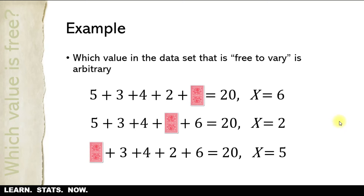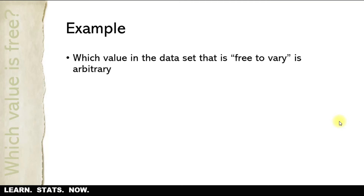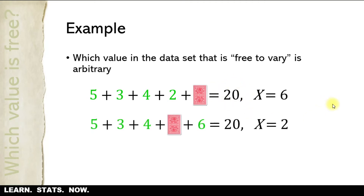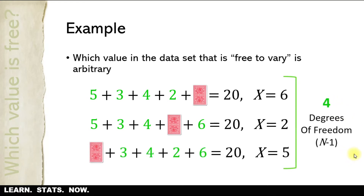What we do know is that the number of arbitrary values — the number of values that are free to vary — equals the size of the sample minus one. In this case, four observations could take on any value so long as the total sum equals 20. So there are four degrees of freedom. When we talk about degrees of freedom, we don't care about the actual values; we just care that those four observations could take on any value so long as the sum equals 20 — meaning those pieces of information are pretty independent of everything else we know about the sample.